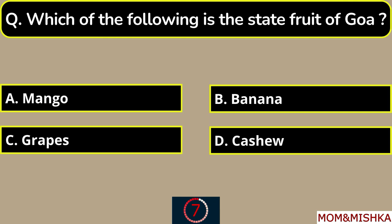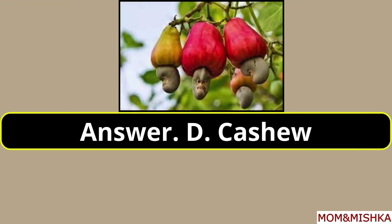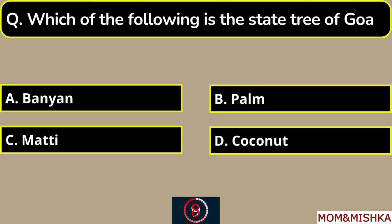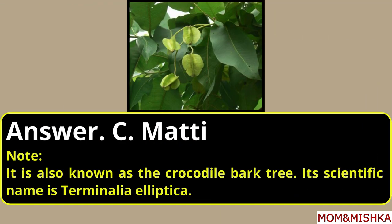Which of the following is the state fruit of Goa? It's called Matti, option C — also called the crocodile bark tree, and its scientific name is Terminalia elliptica.